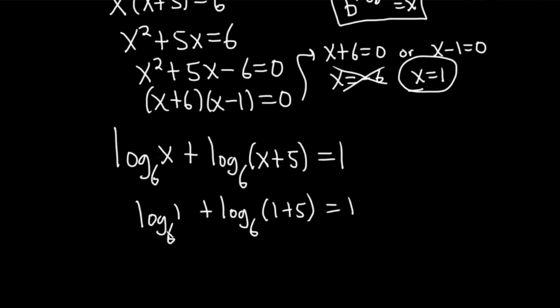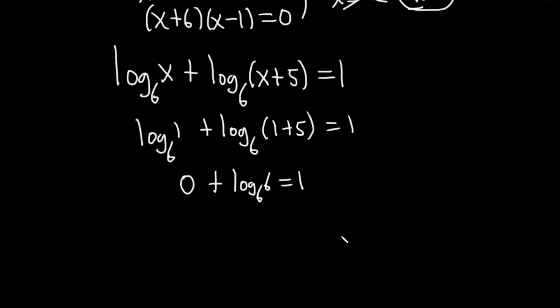This should be equal to 1. So basically just put a 1 where the x is. So you get log base 6 of 1 plus log base 6 of 6. Log base 6 of 1, well, this is 0 because you say 6 to what power is 1? 0. The log of 1 is always 0 plus log base 6 of 6 equals 1. Log base 6 of 6 is 1. So 1 equals 1.